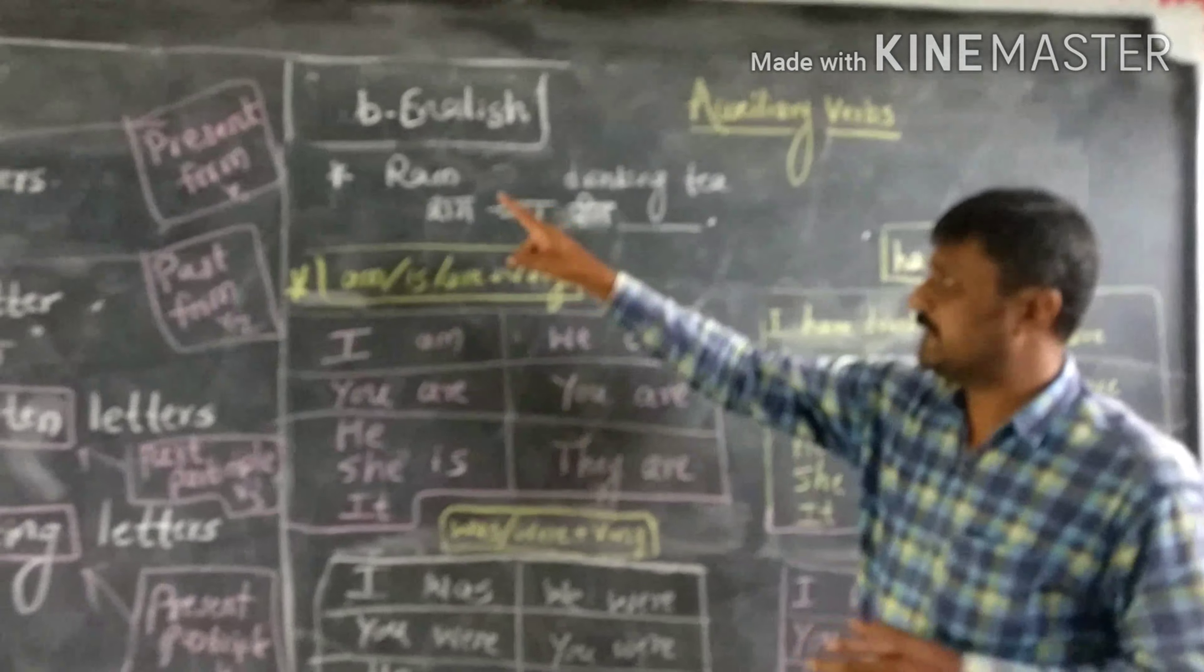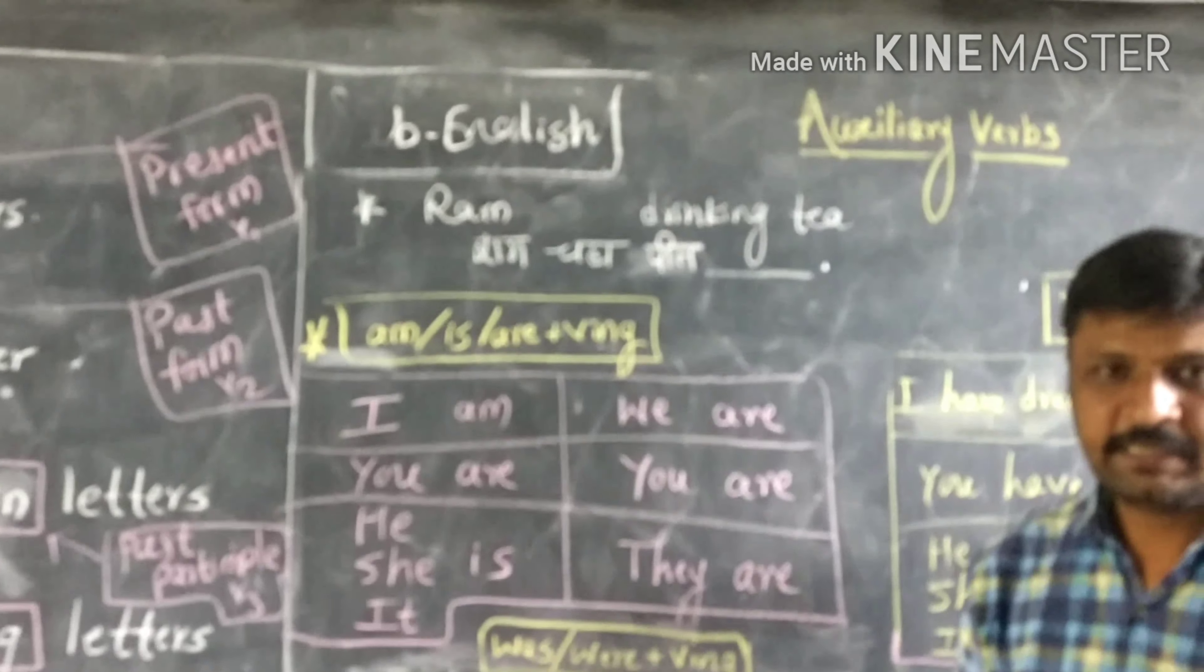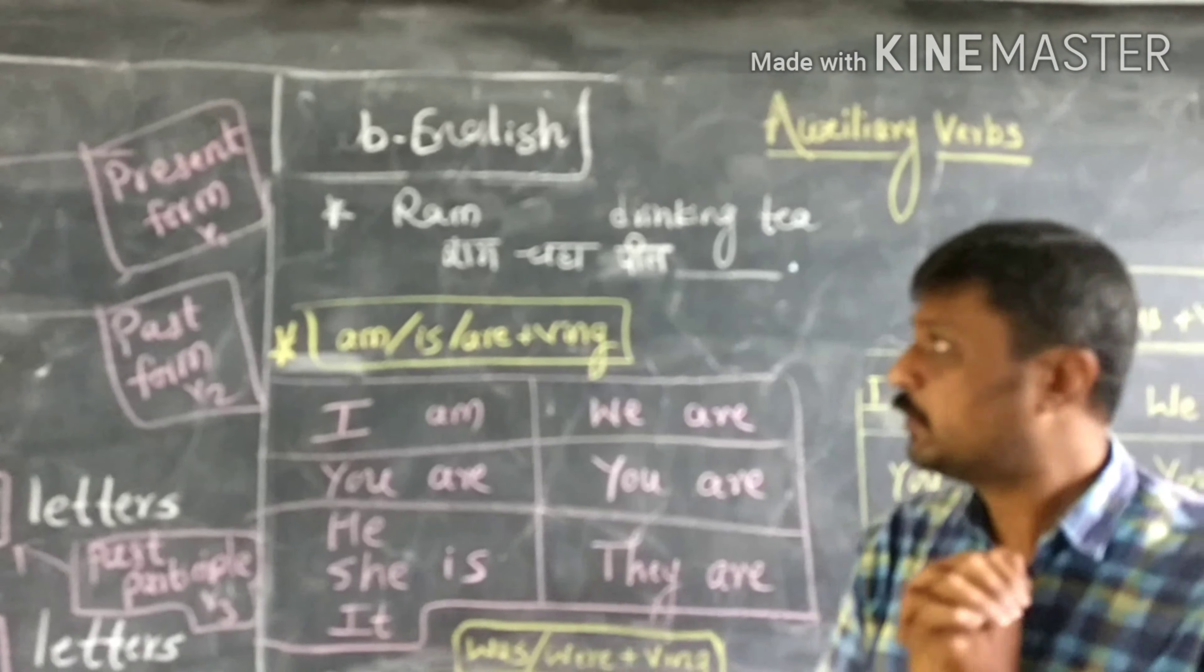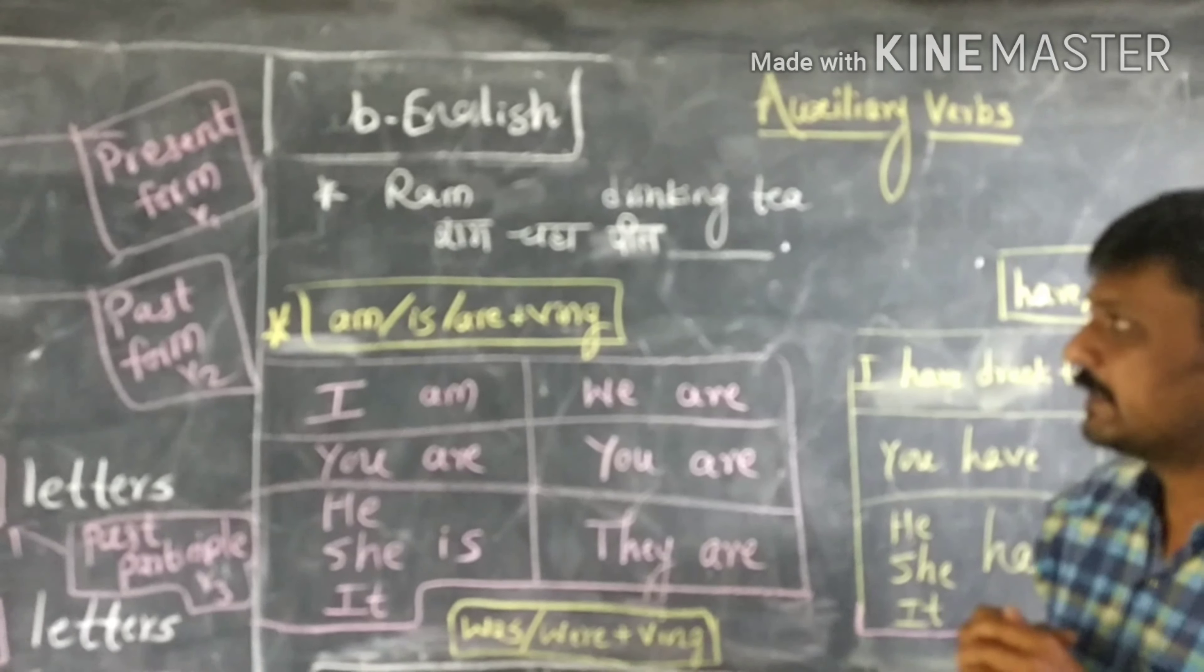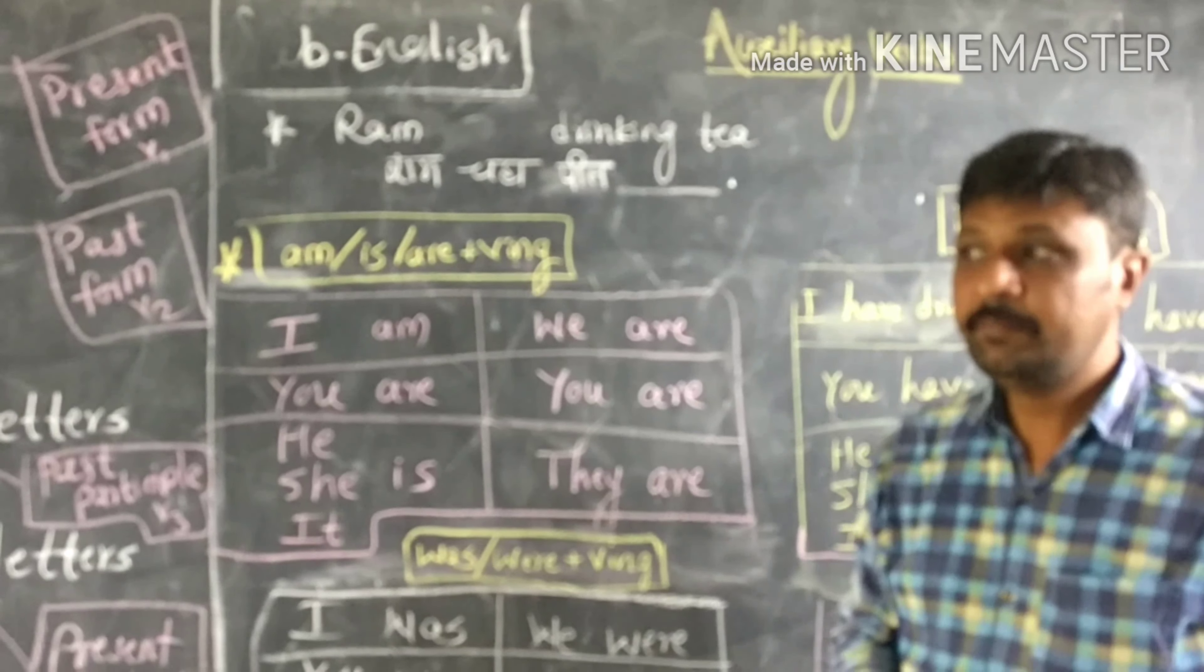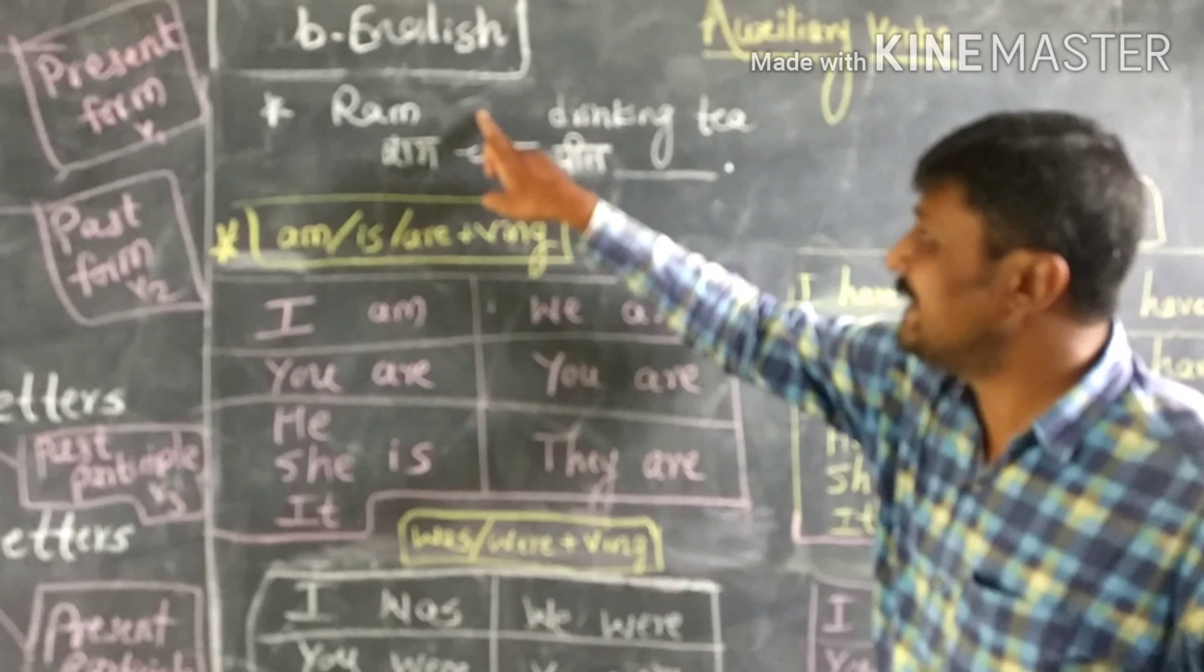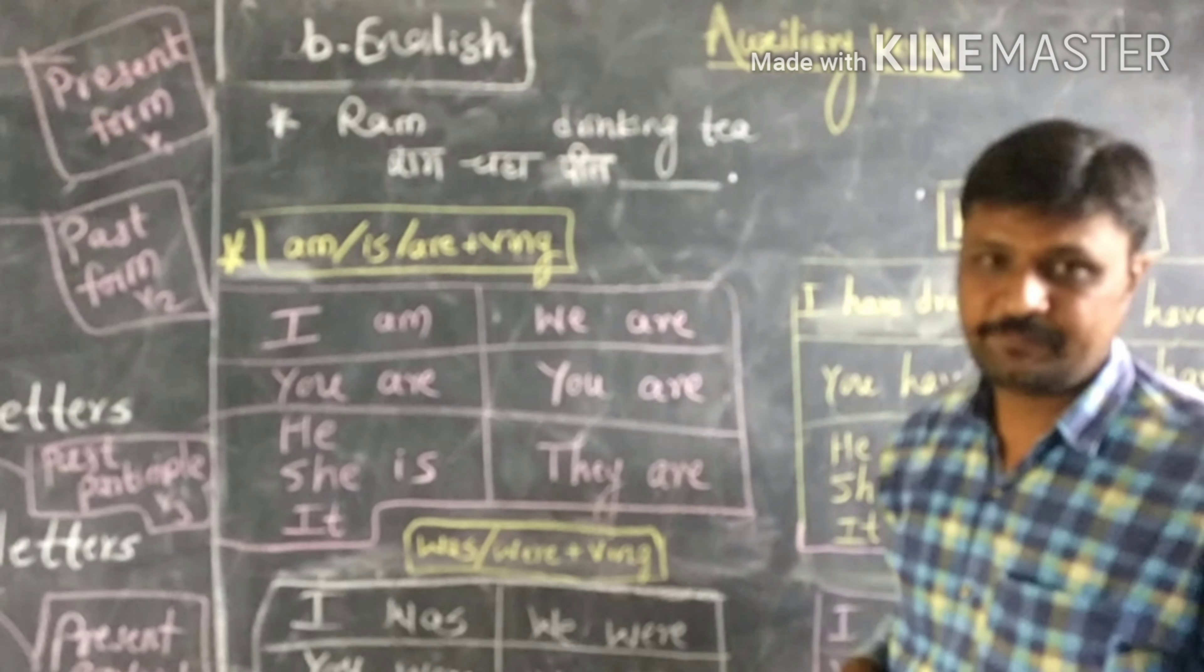Now here is the sentence: Ram drinking water. Is it a meaningful sentence? No. Ram drinking tea. It cannot denote the whole meaning. It denotes the meaning when we use is or was here. Thank you.